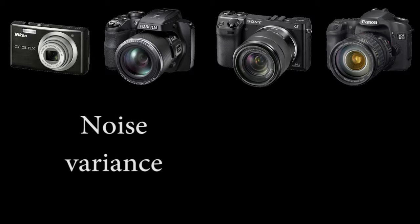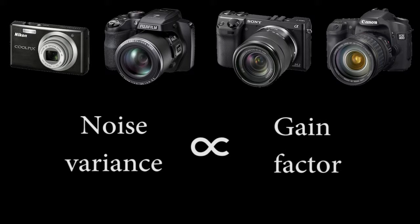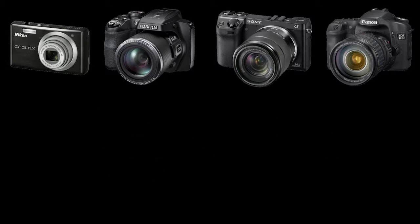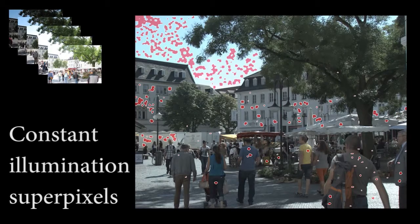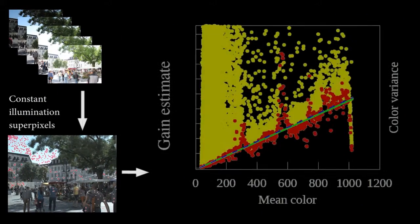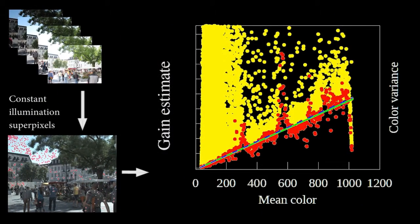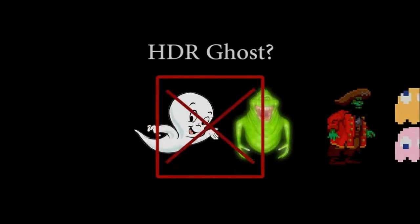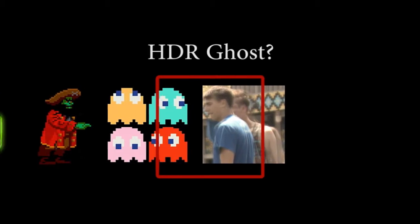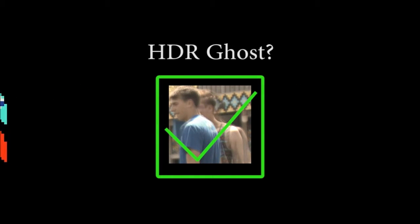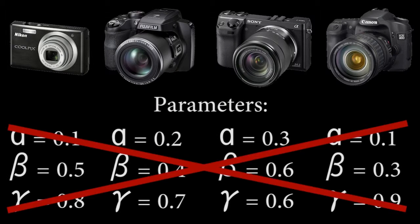However, noise variance depends on camera parameters such as the gain factor and readout noise, and varies across camera models and scenes. We develop an automatic method to estimate the noise distribution from the raw input images, and use this to normalise the colour constancy tests. This improves the discriminative power of ghost detection and removes the need to define fixed thresholds for different cameras and scenes.